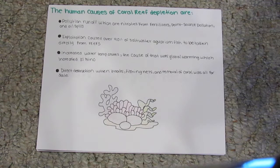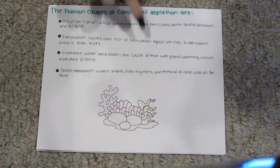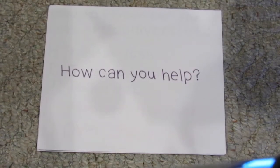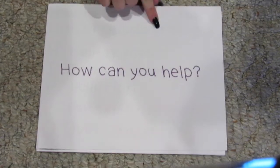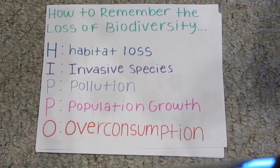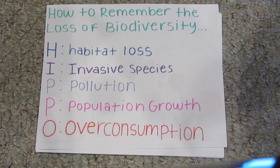After hearing about how humans are affecting biodiversity, you may be asking: how can we help? Always remember the main causes of the loss of biodiversity with the acronym HIPPO: H — habitat loss, I — invasive species, P — pollution, P — population growth, O — overconsumption.